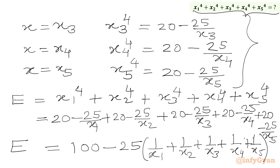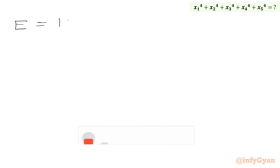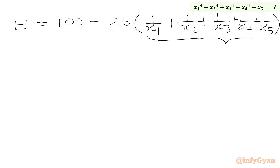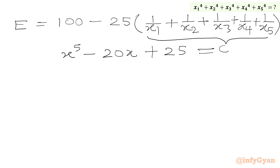Now our major task is to find the sum of these reciprocal roots. Let me write E equal to 100 minus 25 times that bracket value. We have to find this bracket value. So I will write our equation x power 5 minus 20x plus 25 equal to 0. The roots of this equation are x1, x2, x3, x4, x5.